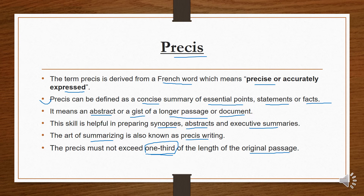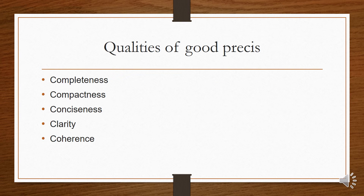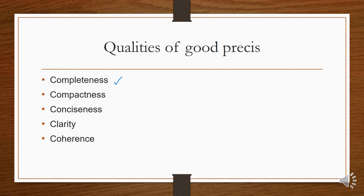Now let's see some qualities of good précis writing. The first quality is completeness. We have a paragraph with a main point — when we write the précis, we will not add examples to it, but we will write it in a short form so that our idea is complete. That main idea is defined in a very short paragraph, and this is called completeness.